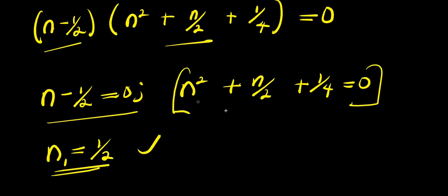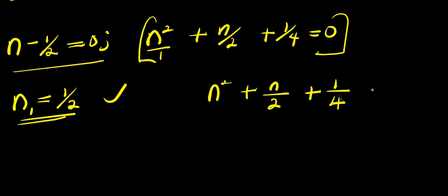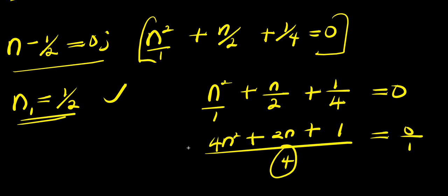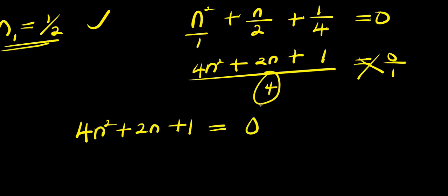Before solving, let's find the LCM. We have n squared plus n over 2 plus 1 over 4 equals 0. The LCM is 4. Multiplying through: 4 times n squared is 4n squared, plus 4 over 2 times n is 2n, plus 4 over 4 times 1 is 1, equals 0. Cross-multiplying gives 4n squared plus 2n plus 1 equals 0.